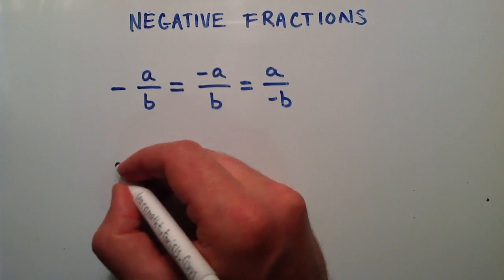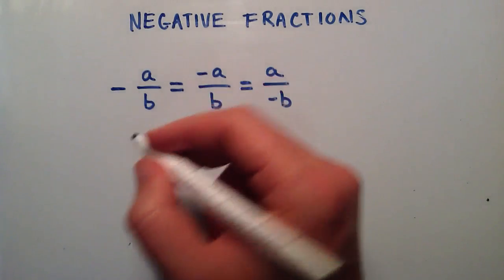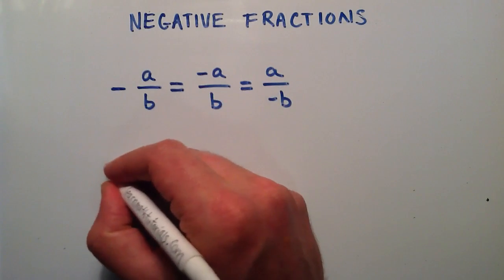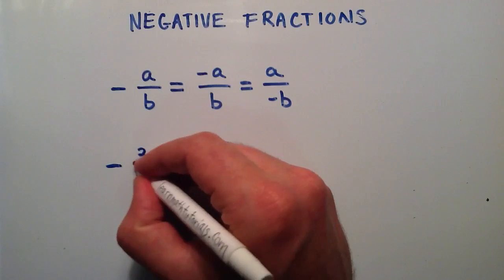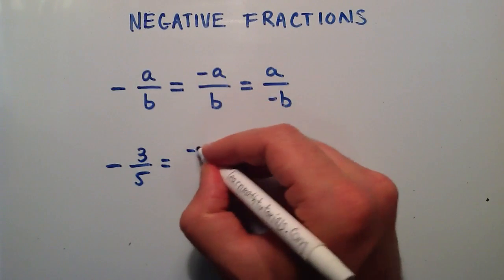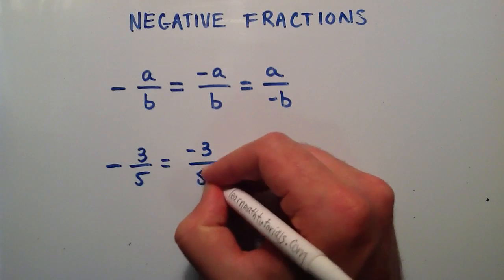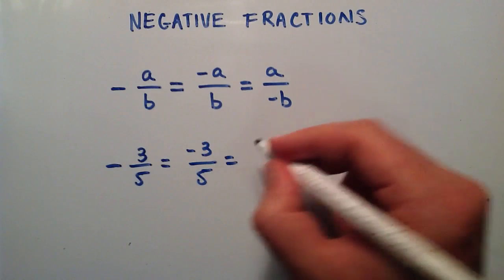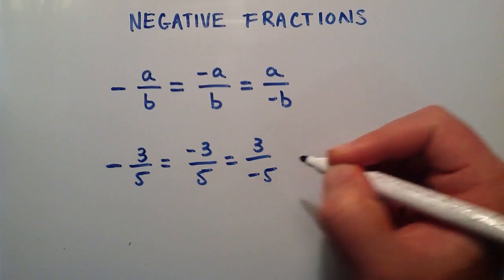Let's just go ahead and put this into numbers to make it more clear. So if we have the fraction negative three-fifths, we can simply rewrite that as a negative three divided by a positive five, or we can say this is a positive three divided by a negative five.